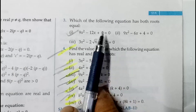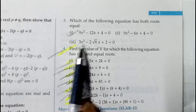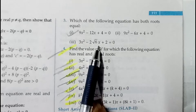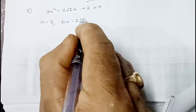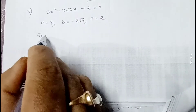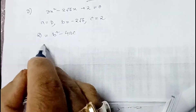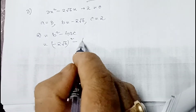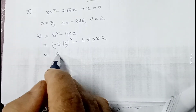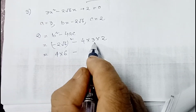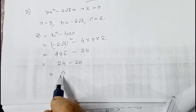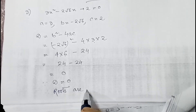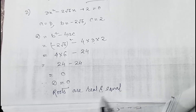The second question of Q3 you can do yourself. For the third part: 3x² - 2√6·x + 2 = 0, so a = 3, b = -2√6, c = 2. D = (-2√6)² - 4×3×2 = 4×6 - 24 = 24 - 24 = 0. Since D = 0, roots are real and equal.